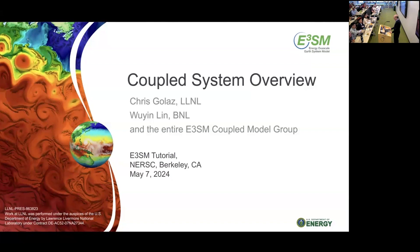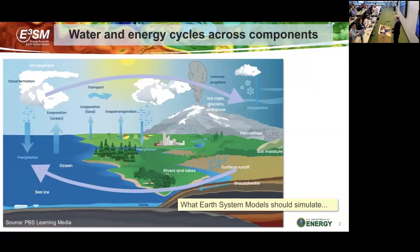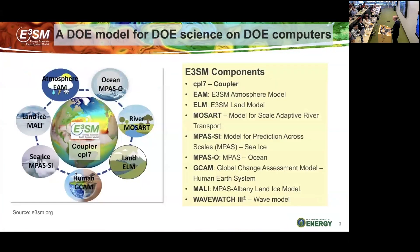Thank you all for coming. I'll give you an overview of the coupled system in E3SM. This is basically what we are trying to simulate — all the water and energy cycle across all the components: atmosphere, land, ocean, sea ice, river, and so forth. There are a lot of processes in each component, and all those components have to talk together, exchanging mostly heat and water. This is how it's done in E3SM: at the center, you have the coupler, called CPL7, and around that we have the components — the atmosphere, land, MOSART the river runoff scheme, MPAS ocean, and sea ice.